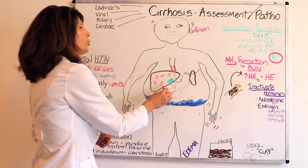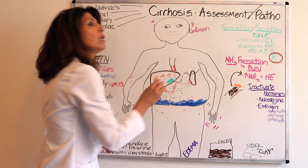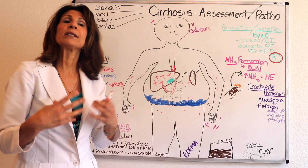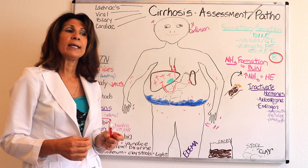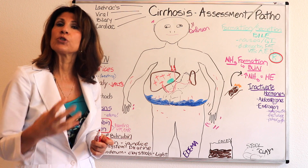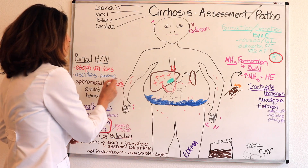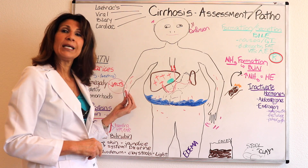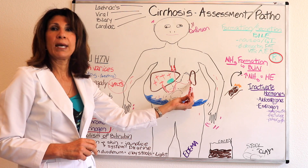Another thing that happens with portal hypertension is that the blood backs up into the surrounding circulation and into the spleen. The spleen then gets enlarged — called splenomegaly — and becomes overactive, removing more platelets from the circulation than it normally would. This is one of the three reasons why patients with liver cirrhosis have a high risk for bleeding: thrombocytopenia due to splenomegaly.